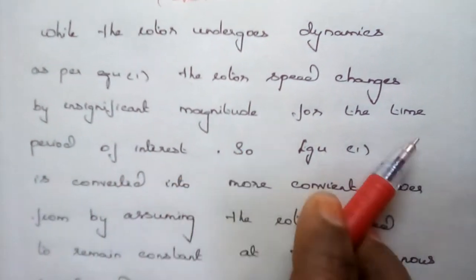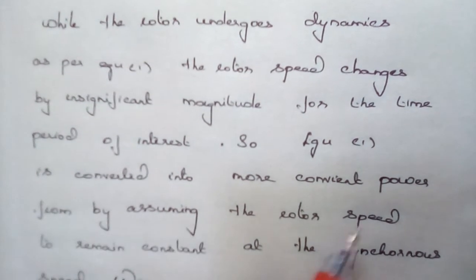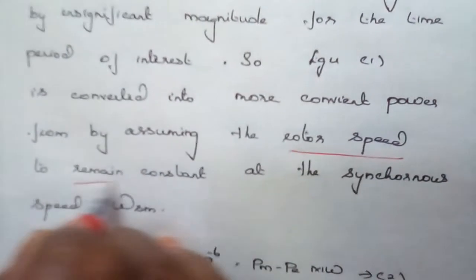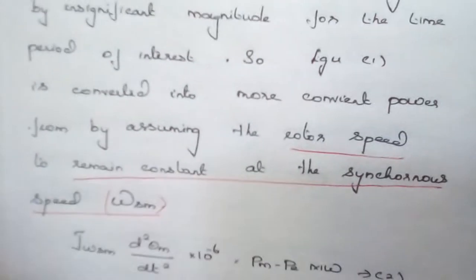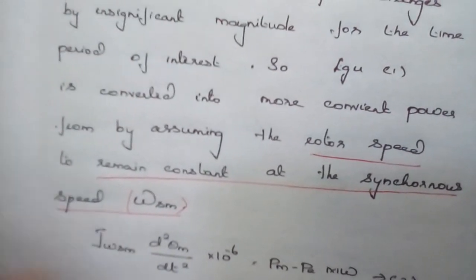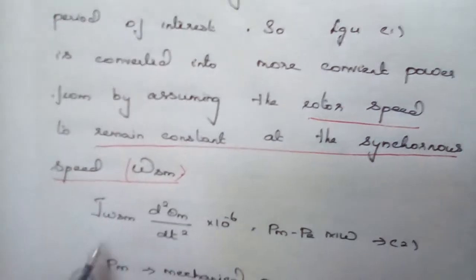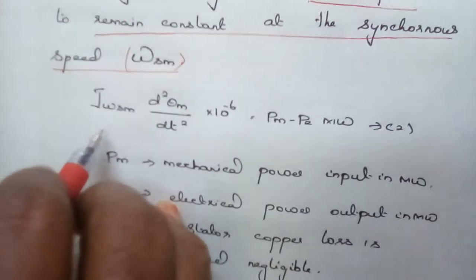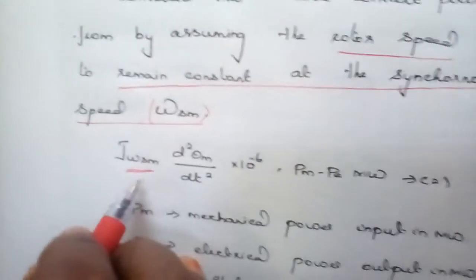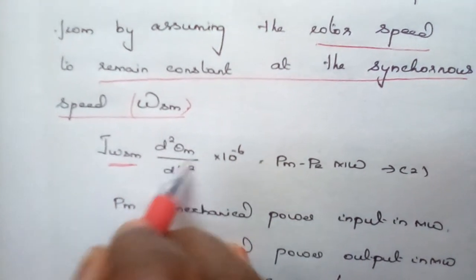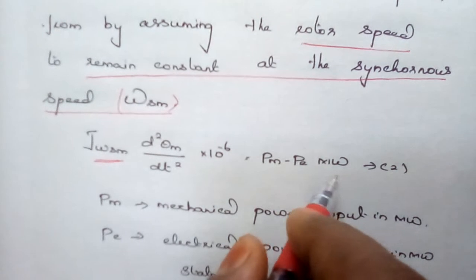The speed of the rotor changes with respect to time. In order to have a constant speed, we are going to assume that the rotor speed remains constant. We are assuming that constant speed as the synchronous speed and denoting this as ωsr. Since we are assuming the speed as constant, that means it is running at synchronous speed. Equation 1 becomes: J·ωsr · d²θm/dt² = Pm − Pe in megawatts.